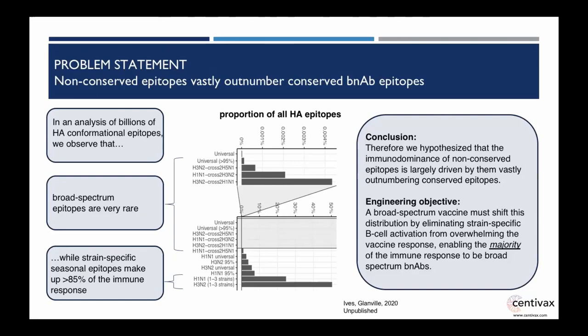The vast majority of antibodies hit sites that bind only one to three strains and then go away — that's how the virus escapes you. Even if you get one relatively conserved epitope out of 100 antibodies, that's only 1% of your immune response, and your titer will go down 99-fold on seasonal change. This provides the engineering objective: a broad-spectrum vaccine must shift this distribution by eliminating strain-specific activation from overwhelming the vaccine response — by eliminating strain-specific epitopes, we shift the distribution so the entire antibody response after vaccination recognizes broad epitopes. That is the only reliable mechanism to create a broad-spectrum antibody-mediated vaccine.